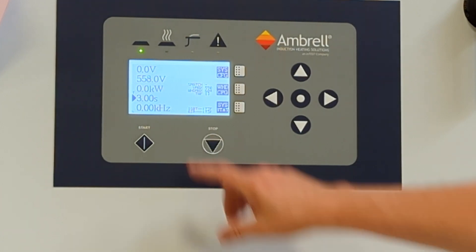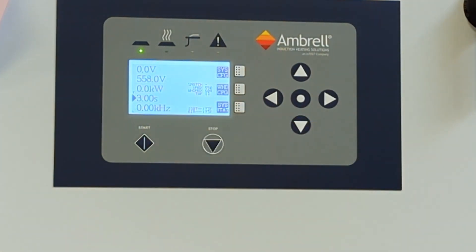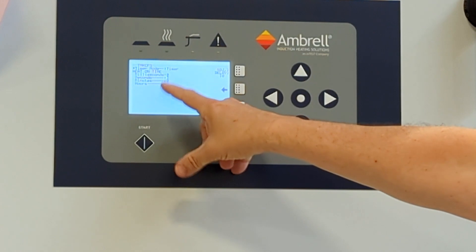The timer mode is designated by a letter T in the lower left hand corner of the display. In timer mode, the machine will start and heat for a preset period of time determined by the setting chosen by the customer. In this case, that's three seconds.